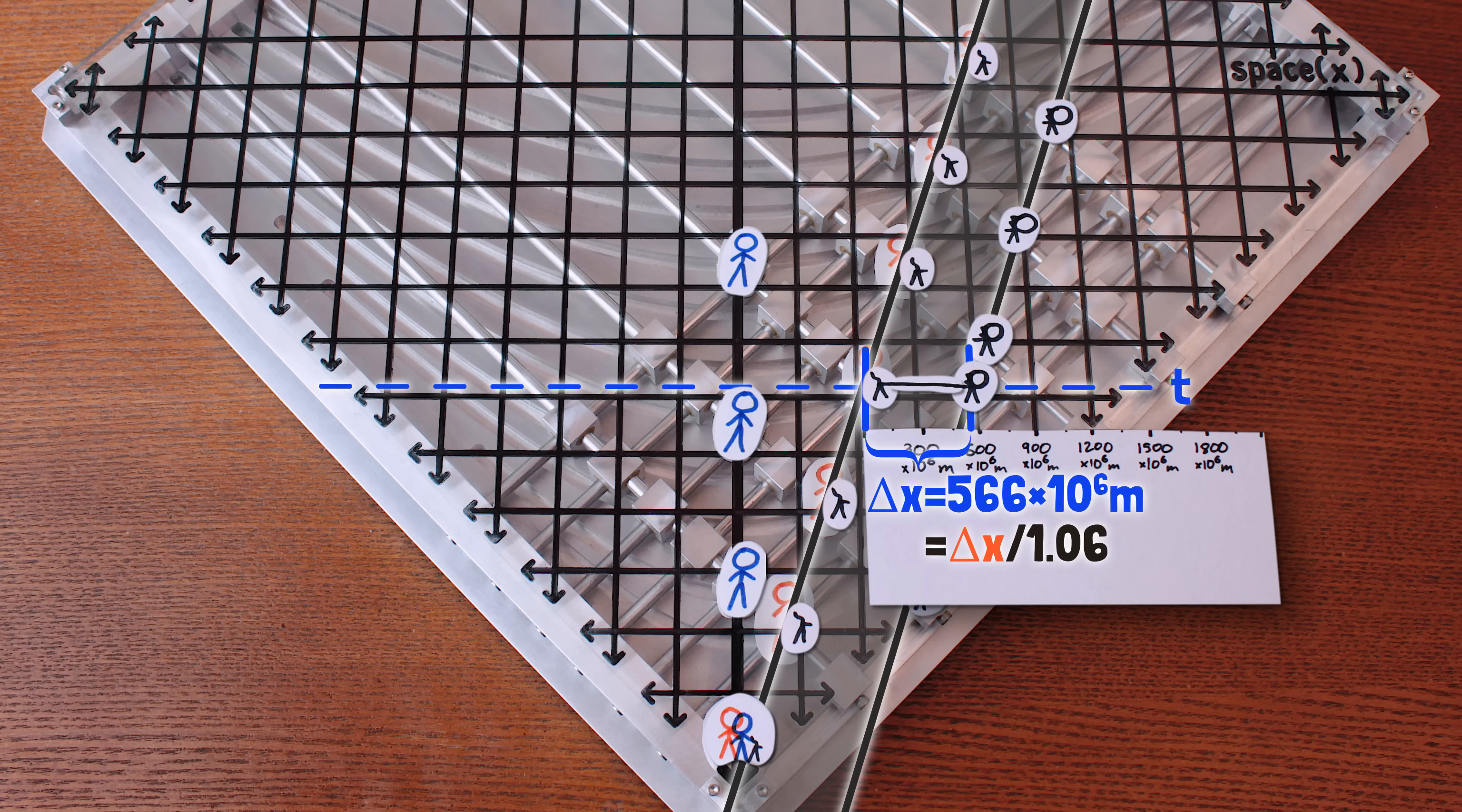In fact, it turns out it's exactly the inverse factor from the other distance. Instead of multiplying 600 million by 1.06, it's divided by 1.06.